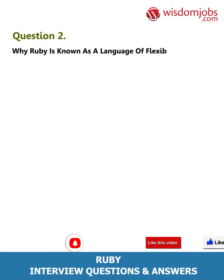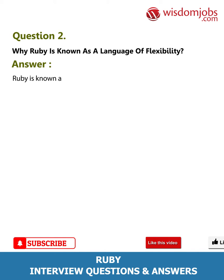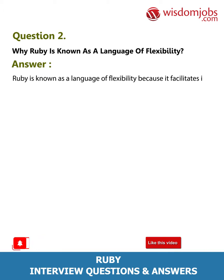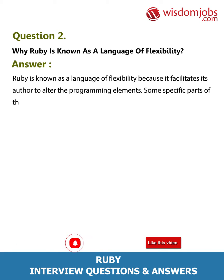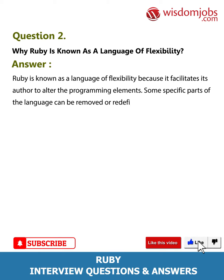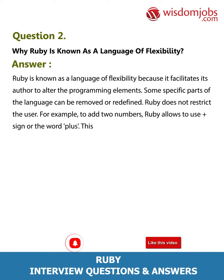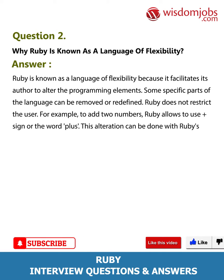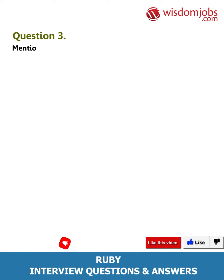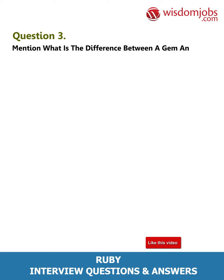Question 2: Why is Ruby known as a language of flexibility? Answer: Ruby is known as a language of flexibility because it facilitates its author to alter the programming elements. Some specific parts of the language can be removed or redefined. Ruby does not restrict the user. For example, to add two numbers, Ruby allows use of the plus sign or the word 'plus'. This alteration can be done with Ruby's built-in class Numeric.